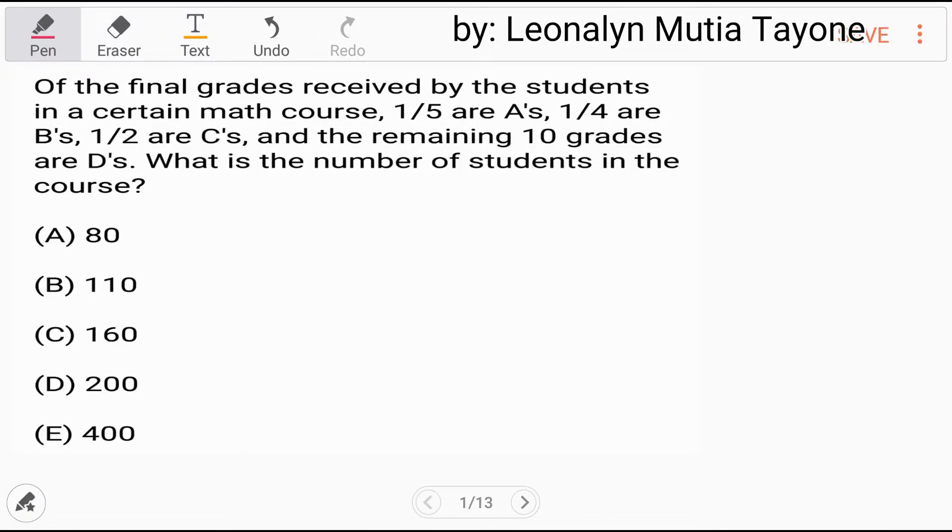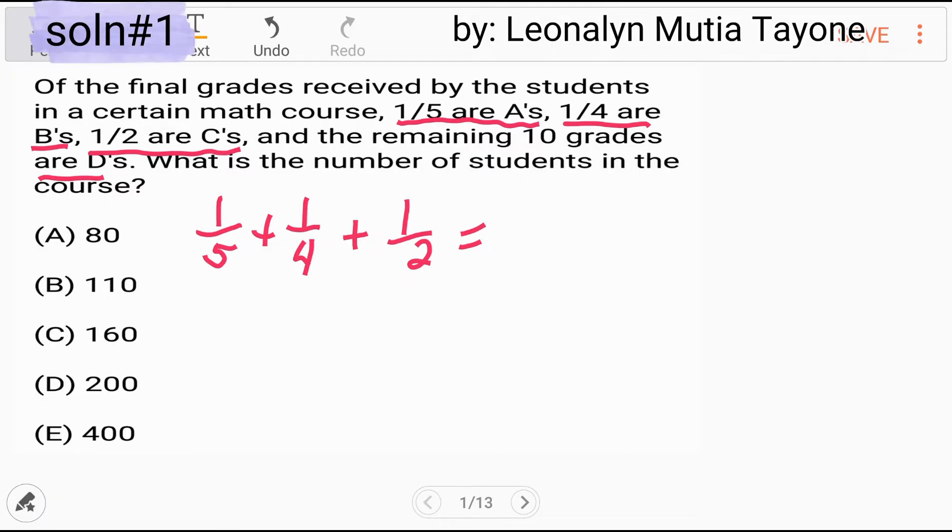Basahin ko ulit yung question. Of the final grades received by the students in a certain math course, one-fifth are A's, one-fourth are B's, and one-half are C's, and the remaining 10 grades are D's. So i-add lang natin yan siya. Let's consider this as our solution number one. I-add mo lang yan sila lahat, one-half. Para ma-add natin sila, let's find the least common denominator. Ang least common denominator nito ay 20.